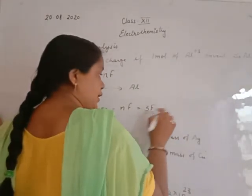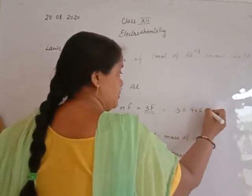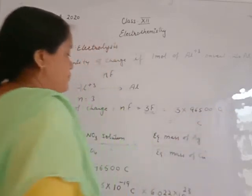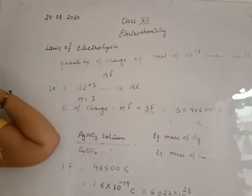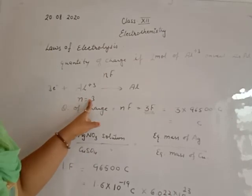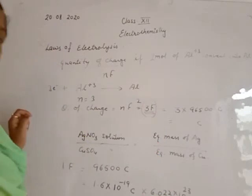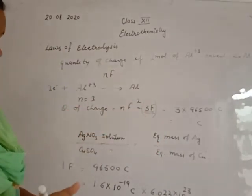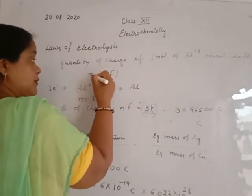If you want to calculate the numerical value, substitute the value of the Faraday constant as 96500 coulombs, solve, and you get the quantity of charge. This is for 1 mole. Suppose you have 2 moles — the charge will be double, as the number of moles multiplies the result. The full formula multiplies by the number of moles.